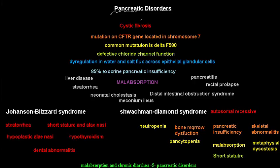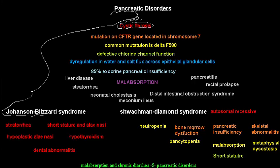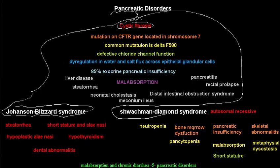In this video, I'm going to talk about pancreatic disorders that affect absorption — the very common cystic fibrosis, the very uncommon Johanssen-Blizzard syndrome, and the also uncommon Shwachman-Diamond syndrome (SDS). I'll start with cystic fibrosis, but I'll make a separate detailed video on that subject. For now, let's briefly cover it.